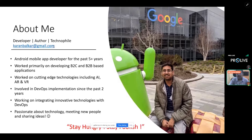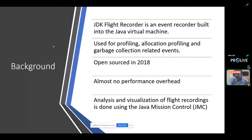Coming to today's topic — here's a brief background. The Java Flight Recorder was an event recorder built into the JVM. Its main objective was to perform activities like profiling, garbage collection analysis, and black box analysis. It was open-sourced in 2018, and it is said to have almost no performance overhead. When using the default settings, the performance overhead observed is slightly less than two percent.